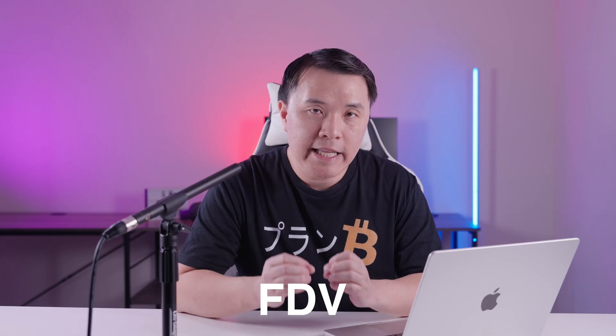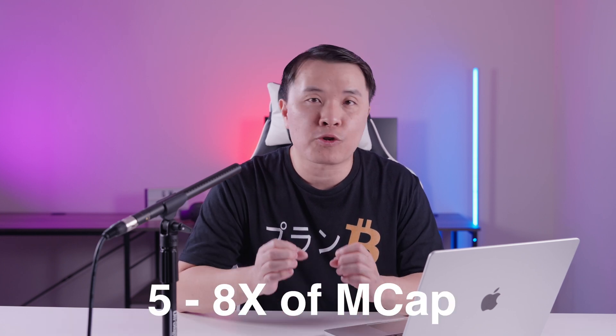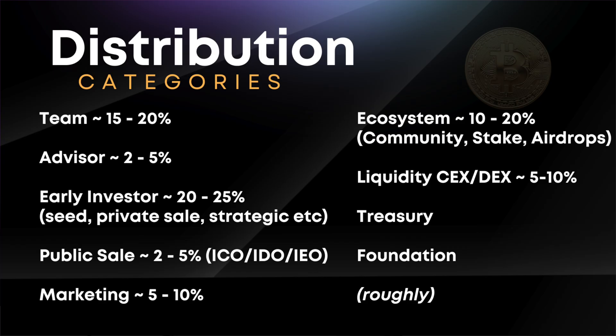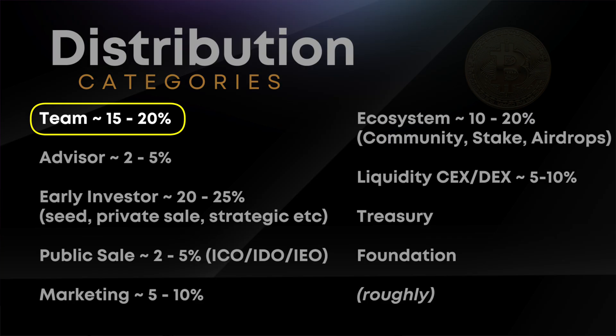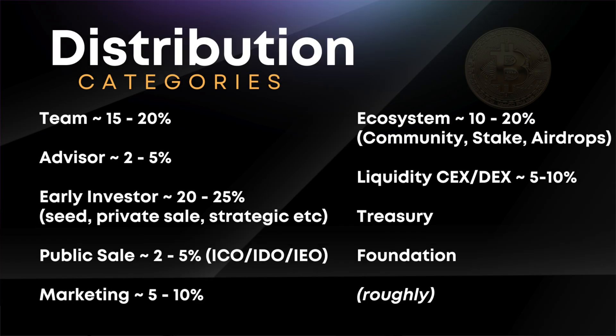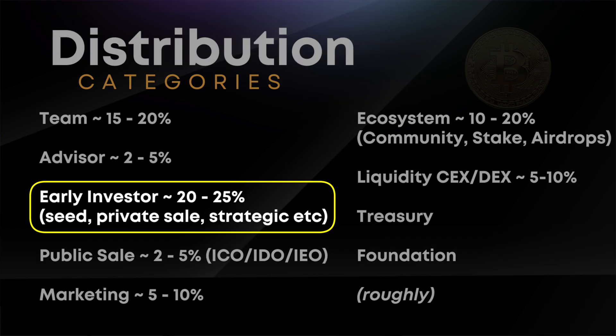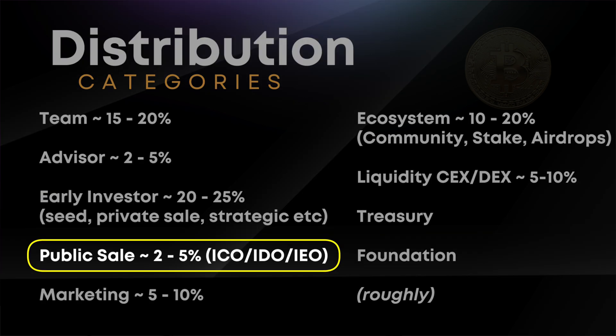That's why it's important to understand FDV and take it seriously — it's a really valuable tool. I only look for things where FDV is between 5 to 8 times the market cap at most; 10 times and you're really pushing it. Most projects allocate tokens across categories: teams get 15–20%, advisors 2–5%, early investors (seed, private sale, strategic, KOL, institutional rounds) 20–25%, and the public sale is usually very small at 2–5% through IDOs, ICOs, or IEOs launched to retail investors.